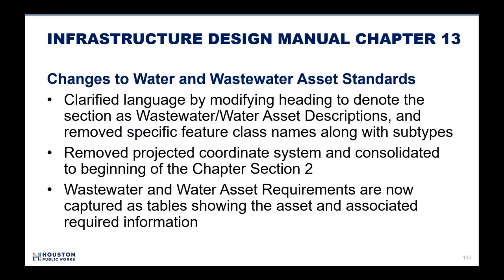Within the water and wastewater utility sections, now located under the newly created asset-specific section, language was clarified to refer to wastewater asset descriptions rather than feature classes. References to specific feature class names and subtypes were removed to avoid having to change the IDM chapter when schema changes are made. Projection and accuracy statements were moved from individual subsections to a separate section. Asset requirements are now shown as a concise table showing the assets and associated required information.